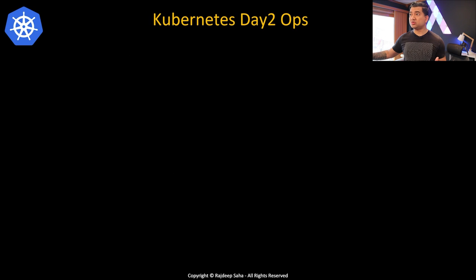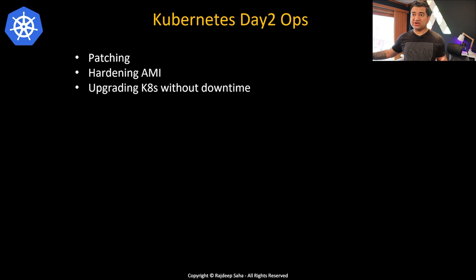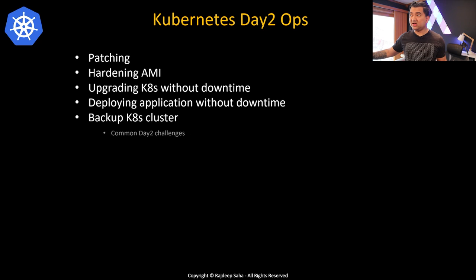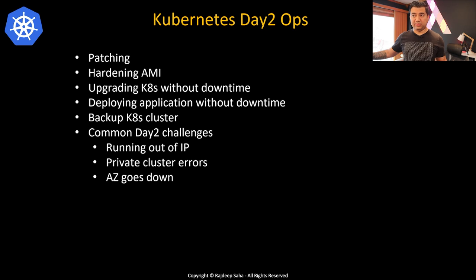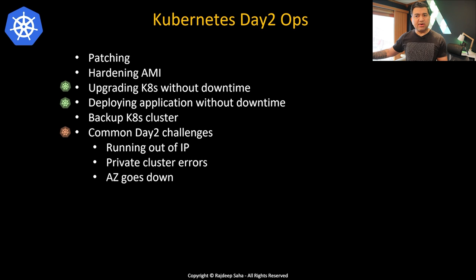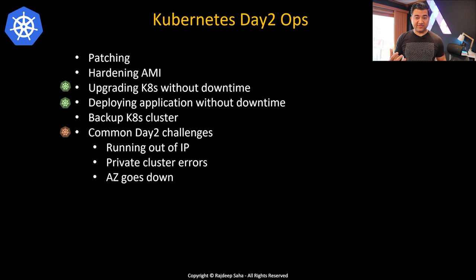Kubernetes day two operations is more relevant for Kubernetes administration. Learn how to patch Kubernetes, how to harden a Kubernetes AMI for worker nodes, how to upgrade Kubernetes without downtime, how to deploy an application without downtime, how to back up a Kubernetes cluster, and common day two challenges such as running out of IP addresses, private cluster errors, and availability zone failures. For interviews, focus on upgrading Kubernetes without downtime, deploying applications without downtime, and having at least one common day two challenge ready to discuss.